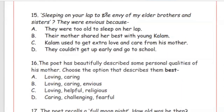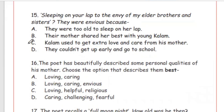Question 15: 'Sleeping on your lap to the envy of my elder brothers and sisters' — why were they envious? Options: they were too old to sleep on her lap; their mother shared her best with young Kalam; Kalam got extra love and care from his mother; they could not get up early. Option C is the right answer — Kalam used to get extra love and care from his mother.